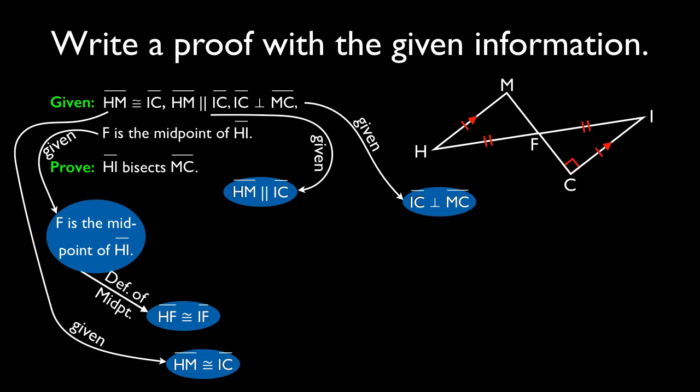Since segment HM is parallel to segment IC, and IC is perpendicular to MC, we can use the perpendicular transversal theorem to say that segment HM is perpendicular to segment MC.